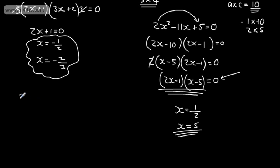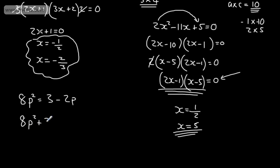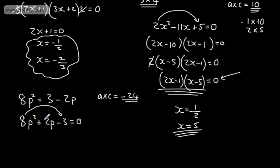Let's try another one: 8P squared equals 3 minus 2P. So this time our variable is P. At the moment this is not in the form we want. We want AP squared plus BP plus C is equal to 0. So adding 2P and subtracting 3, we get 8P squared plus 2P minus 3 equals 0. I'm going to do A multiplied by C, and in this case A times C gives me negative 24. I need two numbers that multiply to give negative 24 and add to give 2.